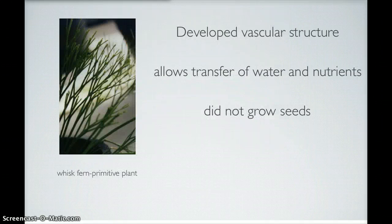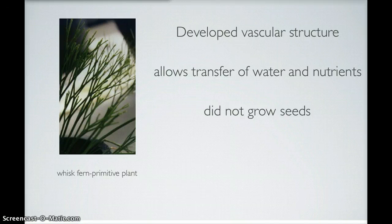This image is an example of a whisk fern. It's one of the very first seedless vascular plants that can be seen by the fossil record. Since this plant, they have developed a vascular structure that allows transfer of water and nutrients, and does not grow seeds.